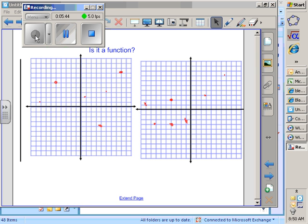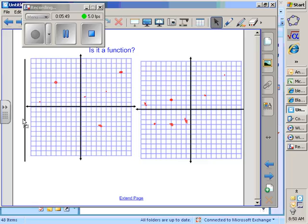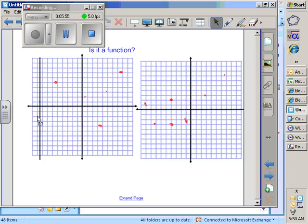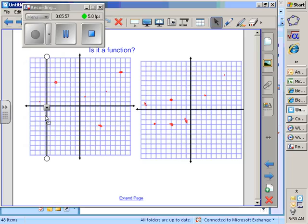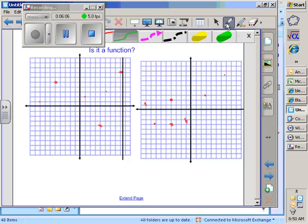Is it a function? Is it a function? So in my left problem, I can do a vertical line test. Here's my vertical line. I start going across. It only passes. There's only one point right here. I keep going. There's only one point there. There's only one point there. There's only one point that goes through. There's only one point it goes through. There's only one point it goes through. Is it a function? Yes.